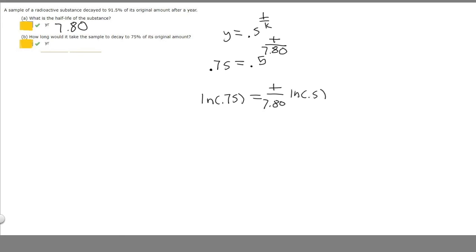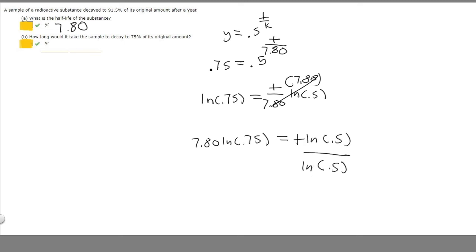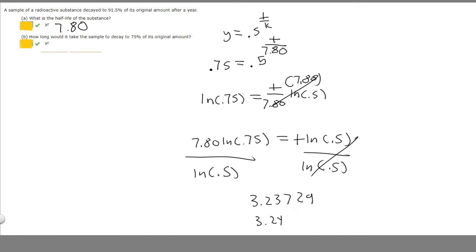We want to get t by itself, so multiply both sides by 7.80. That cancels, giving 7.80 times the ln of 0.75 is equal to t times the ln of 0.5. Dividing both sides by the ln of 0.5, t equals 7.80 times the ln of 0.75 divided by the ln of 0.5. Plugging that into the calculator gives 3.23729, which rounds to 3.24.